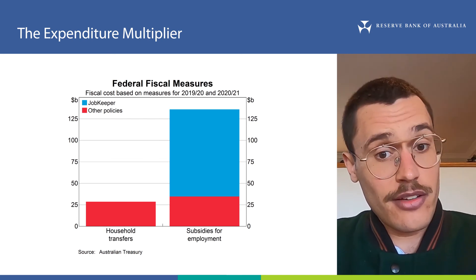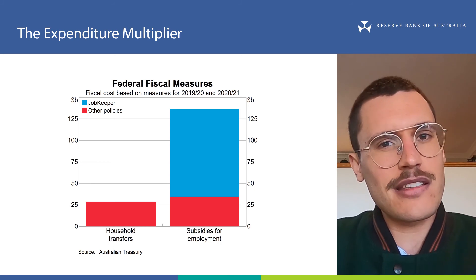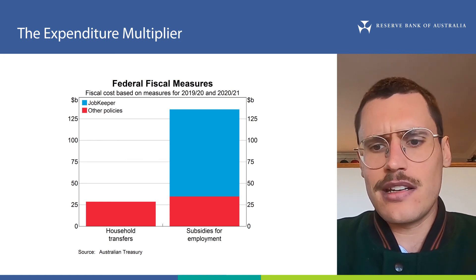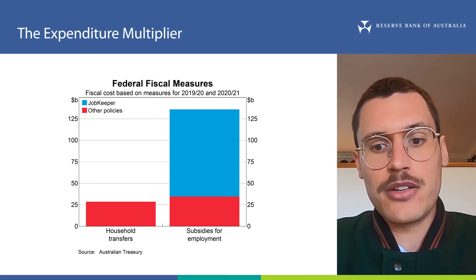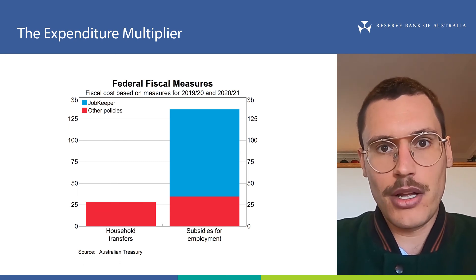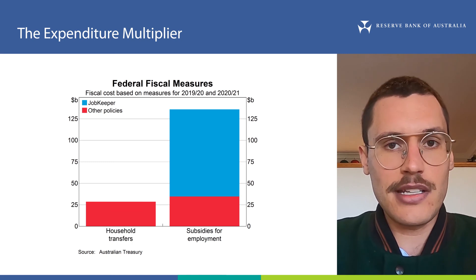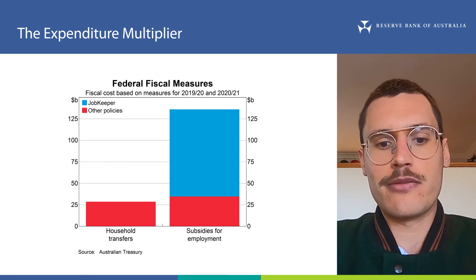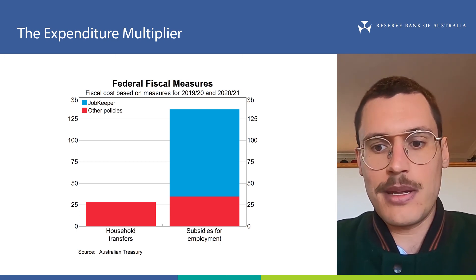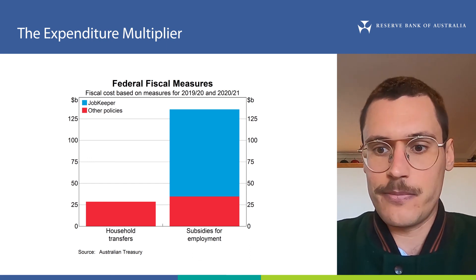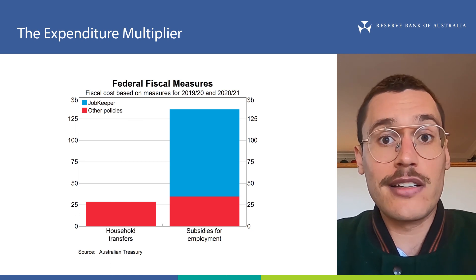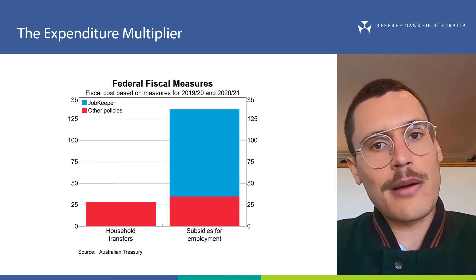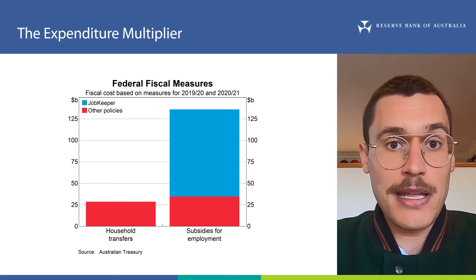So how do policymakers, including those that advise the government, work out who to give the money to, and how do they estimate how much this is going to support the economy? Obviously, they want to give the money to those that need it the most, but they also need to consider the most effective way to spend the money to boost GDP, because that will also determine how many people are made better off by a particular policy. One piece of information that policymakers will consider is the expected expenditure multiplier from different policy options. A higher expenditure multiplier from a policy will mean that more money flows through the economy, benefiting many more people beyond those it was initially given to. In contrast, if the government provides money to people who are likely to save much of it, then the multiplier of that spending will be low and the impact on the economy will be small. This is why policymakers and the government often encourage households and businesses to spend the money that they provide.